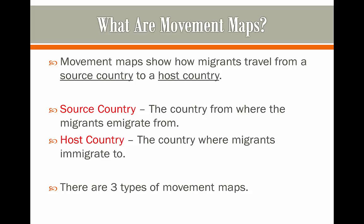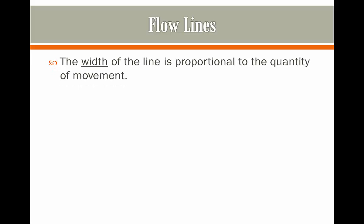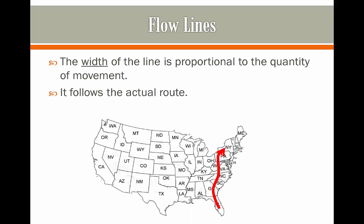There are three types of movement maps that we're going to be looking at in this video. The first of which are flow lines. This is a map where the width of the line is proportional to the quantity of movement happening. It follows the actual route — so here we have migration coming from Orlando all the way to New York. The width is proportional to the movement and it follows the actual route, so you're going to have to follow through all of these states in order to get to New York.